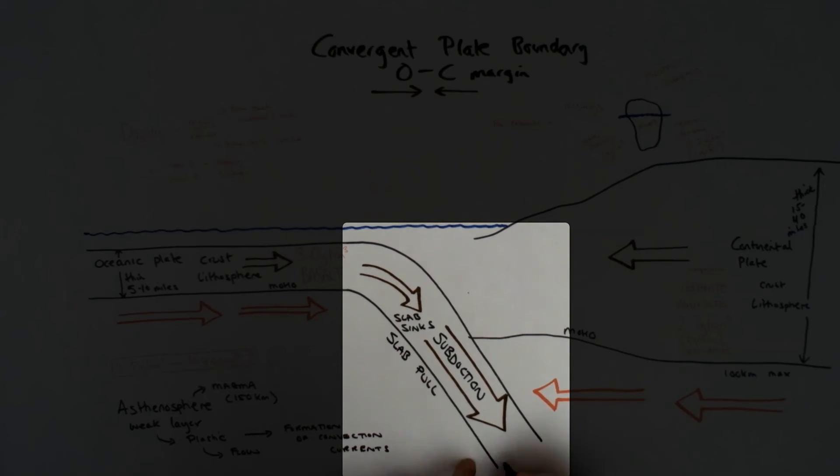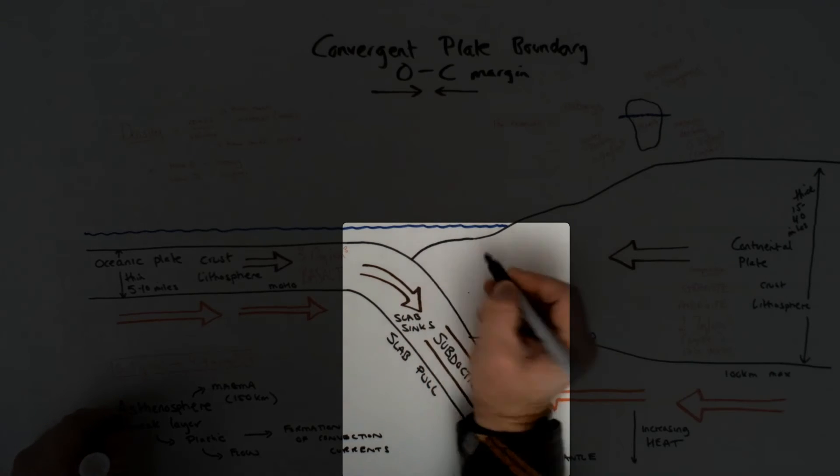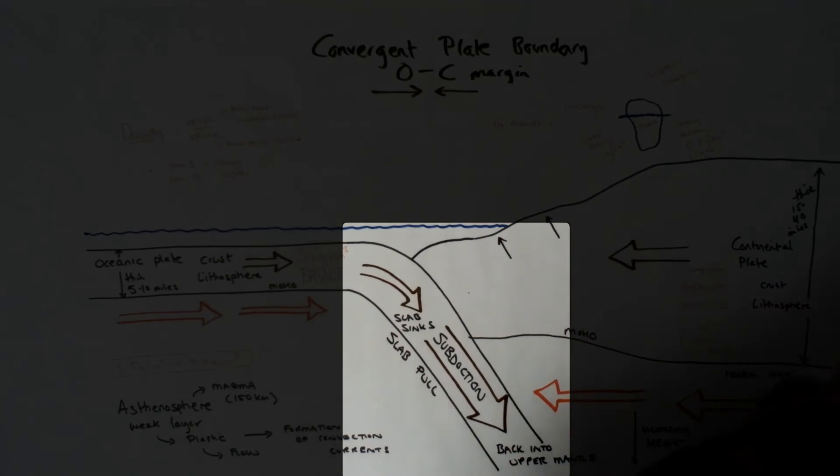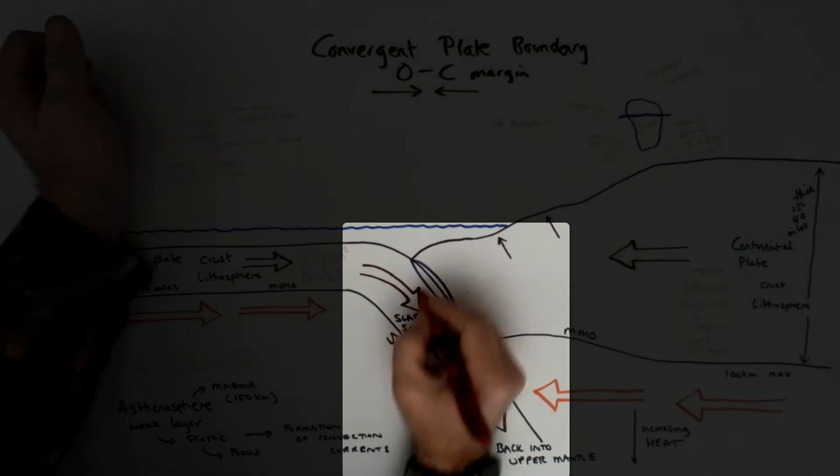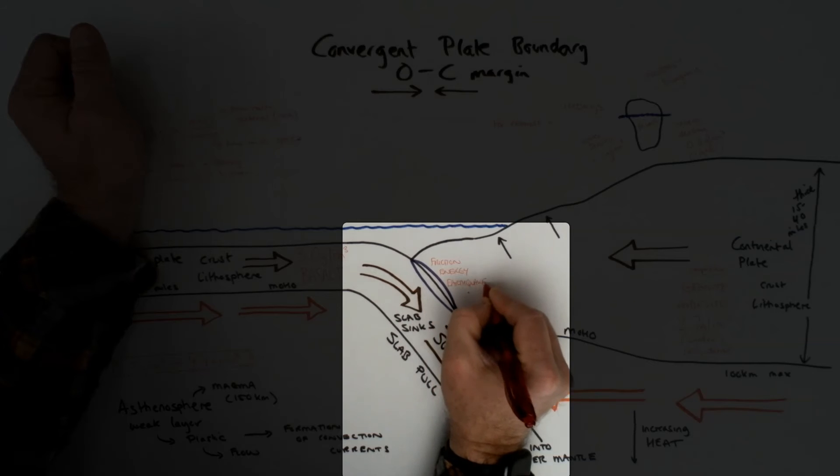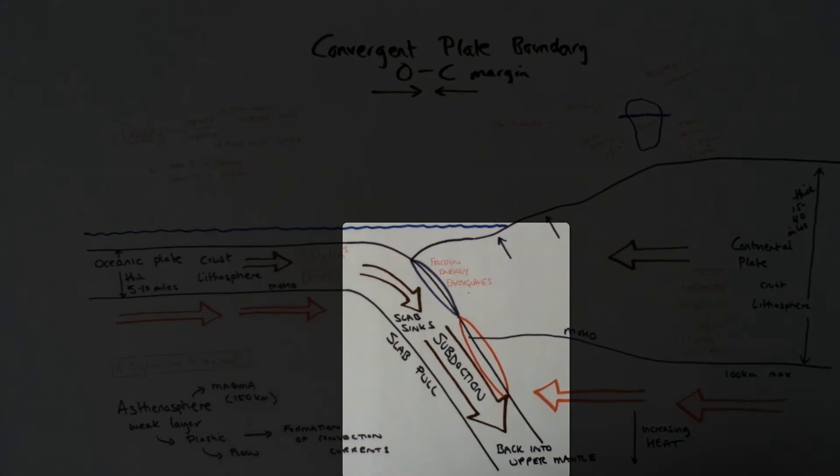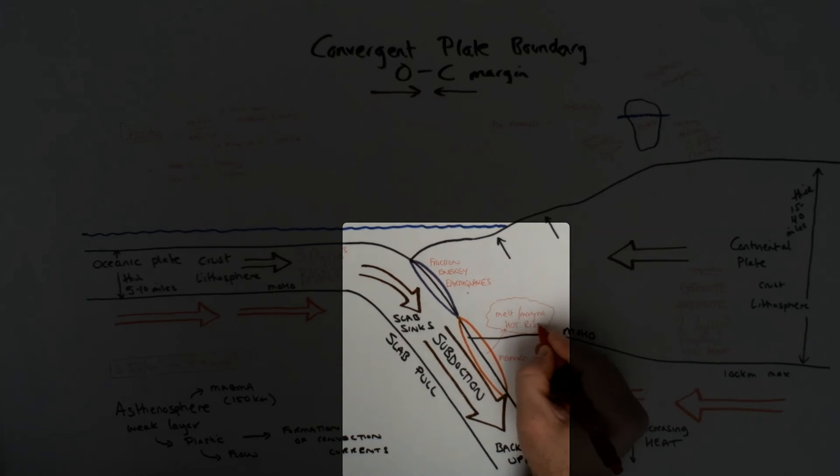The whole process is to force the denser, heavier plate down into the upper mantle and the asthenosphere where it's hotter. You get the friction and earthquakes occurring with the movement of the two plates against each other. You get the accretionary wedge forming, and you get partial melting of both plates. Mostly the continental plate is melting with the addition of water, and it creates melt and magma, which is going to rise up. This is one major process and feature of this plate boundary.